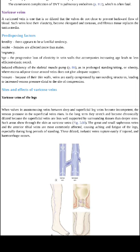Predisposing factors are those factors which may lead to such a condition earlier than possible. The first predisposing factor is hereditary — it can be passed through genetics. Females are more prone to get varicose veins compared to males. Pregnancy is also one of the most important predisposing factors. Old age increases the chance of getting varicose veins, as does obesity and long sitting or standing positions.